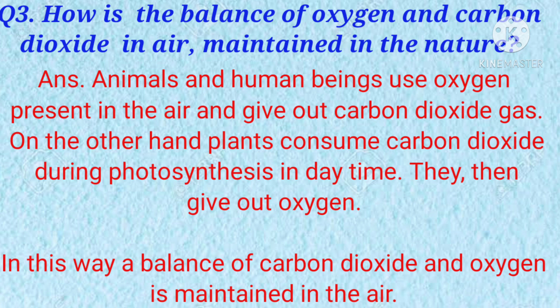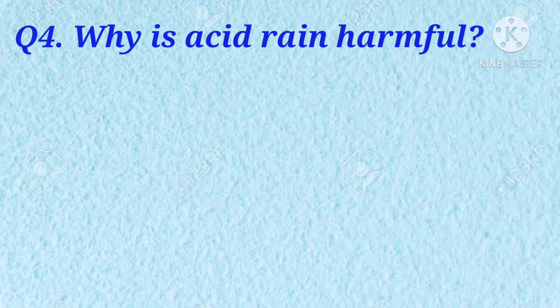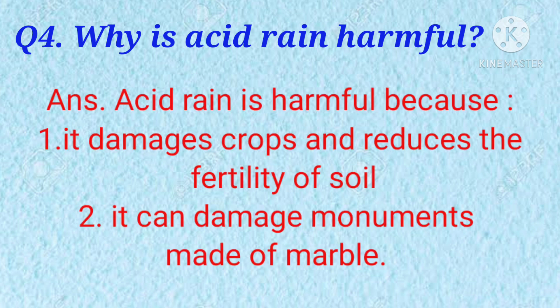Next question is, why is acid rain harmful? Answer: acid rain is harmful because, number one, it damages crops and reduces the fertility of soil; and number two, it can damage monuments made of marble.